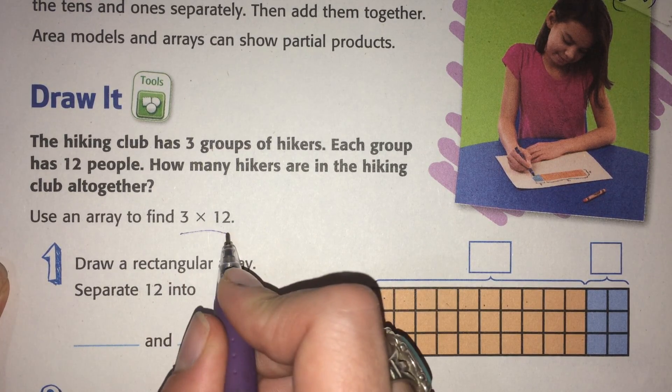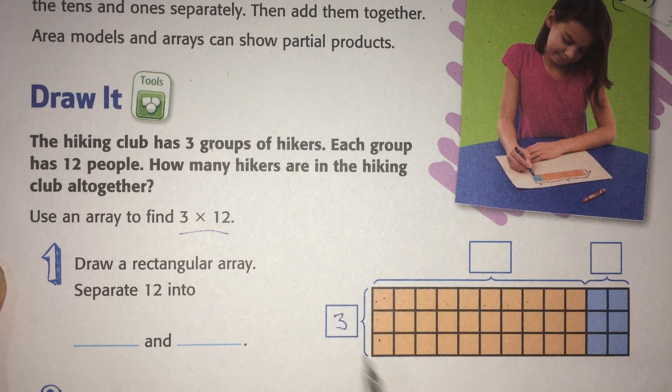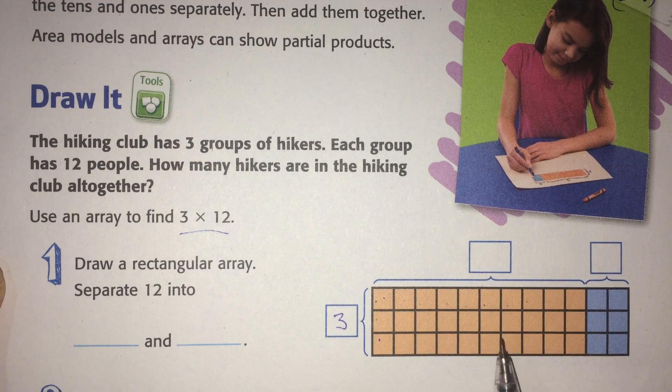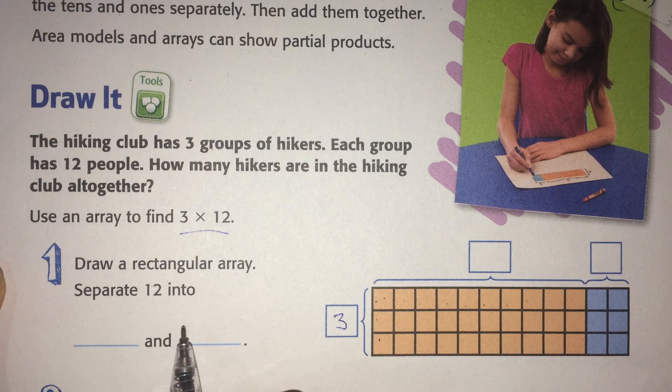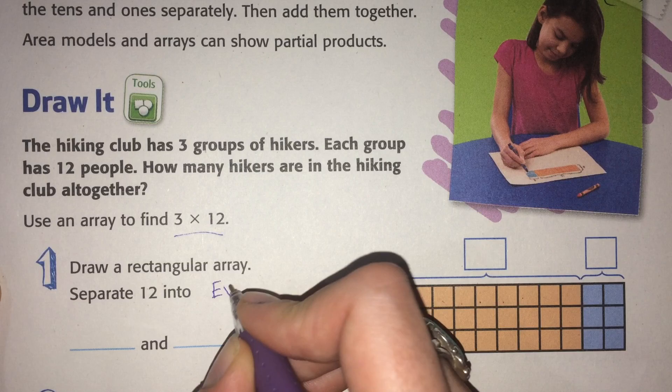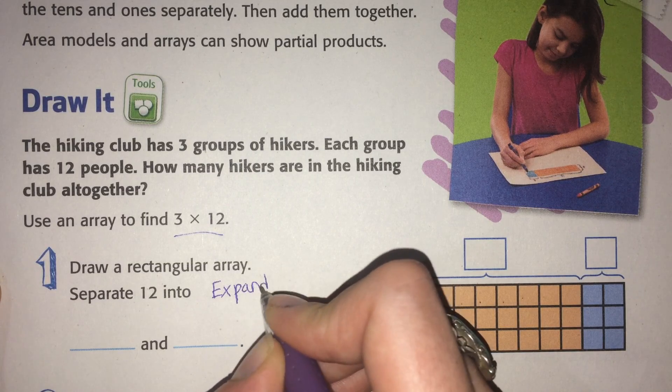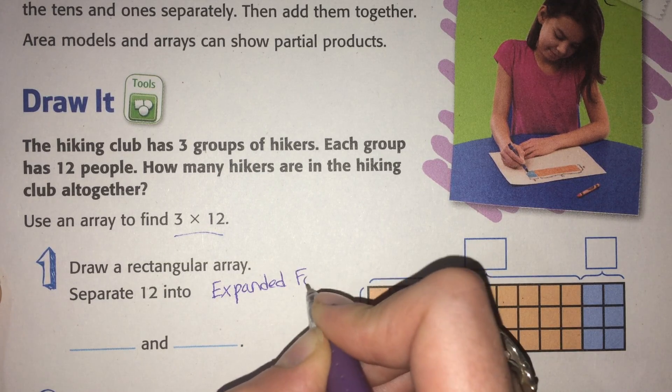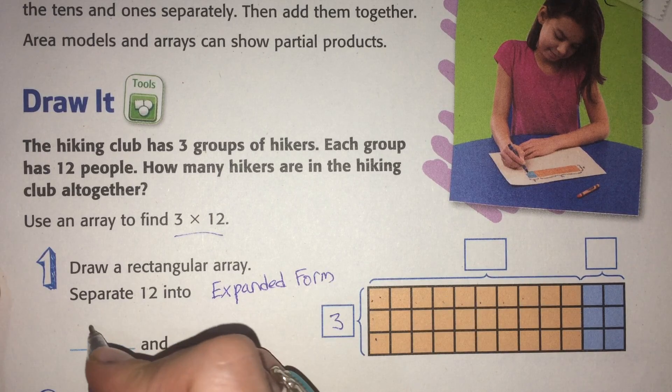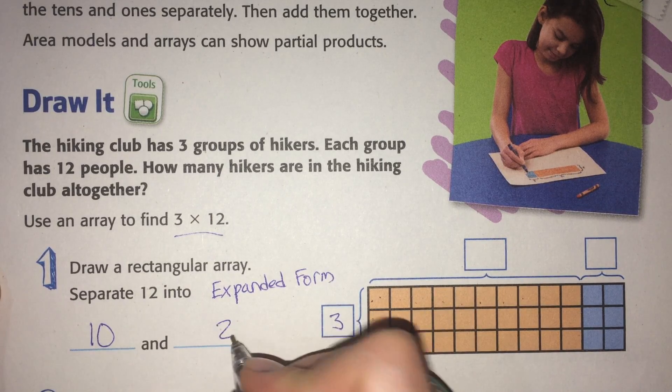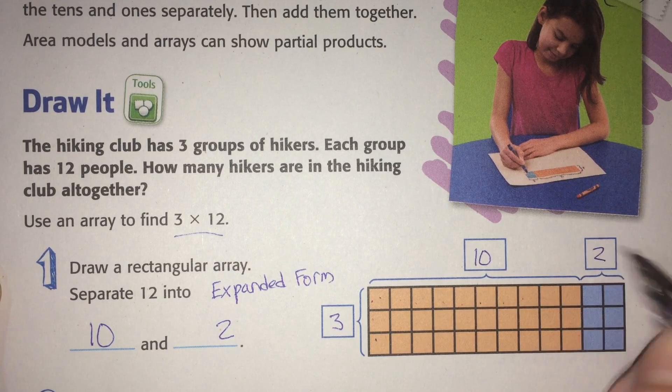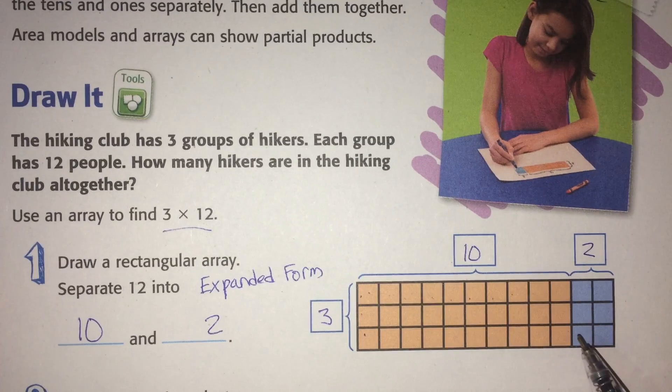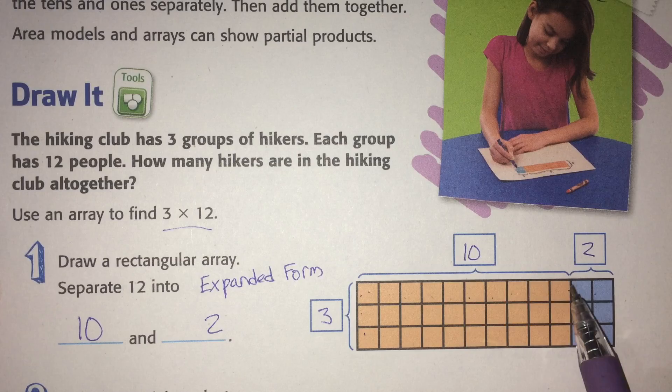So it's 3 times 12. You're going to draw a rectangular array. This is an array. And separate 12 into expanded form. So expanded form would say it was 10 and 2. So here you're going to write 10 and 2 and divide it. So 2 and this one's 10.